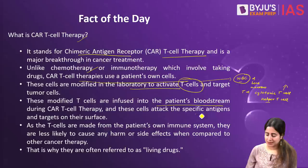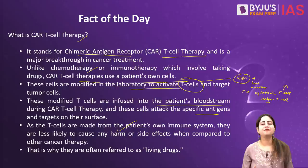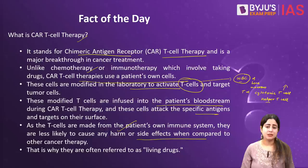Once triggered, the T-cells will attack specific antigens and destroy them. Since T-cells are made from the patient's own blood, they are considered a much safer alternative to early conventional therapies, and are much less likely to cause critical side effects or harm — although that is still controversial. Because they use and activate the patient's own cells, this therapy is often also referred to as the 'living drugs' therapy.